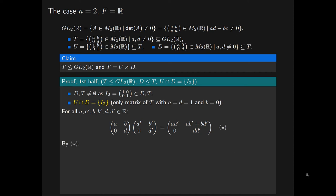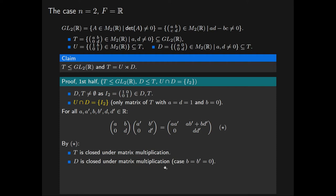By star, T is closed under matrix multiplication. If A, D, A prime, D prime are all non-zero, then A times A prime is non-zero, as is DD prime, and therefore their product belongs to T by definition. We also have by star that D is closed under matrix multiplication. The matrices belong to D if and only if entries B and B prime are both equal to 0, and in this case the top right entry of the product is also 0, so the resulting matrix belongs to D.